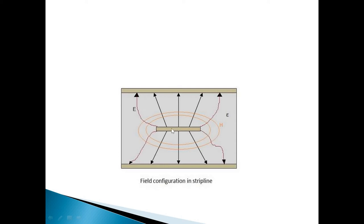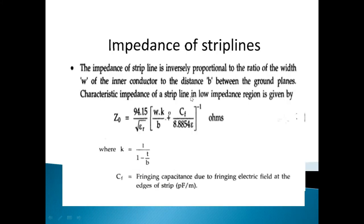The strip line is constructed using a printed circuit board. Its dimensions are chosen to operate with minimum loss. To avoid higher-order mode propagation, the dimensions must be less than lambda_d / 2, where lambda_d is the wavelength in the dielectric medium. Commonly used dielectrics are Teflon and polystyrene. The strip line operates at frequencies from 100 MHz to 100 GHz.